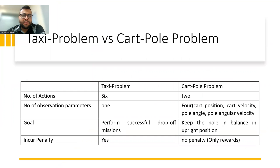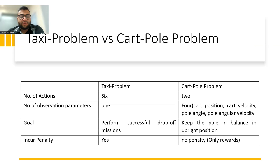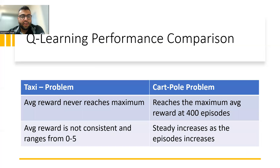So what's the difference between the taxi problem and the cart-pole problem? The taxi problem has six actions while the cart-pole problem has only two actions. The taxi problem has one primary observation parameter, whereas the cart-pole problem has four observation parameters: cart position, cart velocity, pole angle, and pole angular velocity. The goal of the taxi problem is to perform a successful drop-off, while the cart-pole problem's goal is to keep the pole in an upright position. There is a penalty in the taxi problem, but there is no penalty in the cart-pole problem.